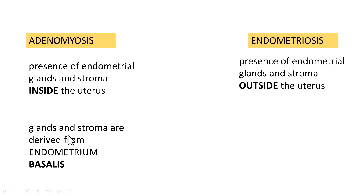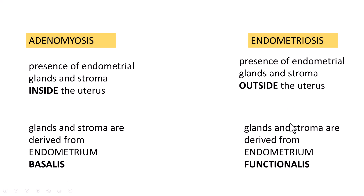The glands and stroma in adenomyosis are derived from endometrial basalis, in contrast to endometriosis where glands and stroma are derived from endometrium functionalis. The functional layer of endometrium gives rise to endometriosis.